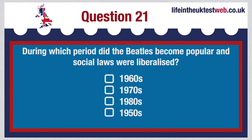During which period did the Beatles become popular and social laws were liberalised? 1960s, 1970s, 1980s or 1950s? The correct answer is: The decade of the 1960s was a period of significant social change. It was known as the Swinging Sixties. There was growth in British fashion, cinema and popular music. Two well-known pop music groups at the time were the Beatles and the Rolling Stones.